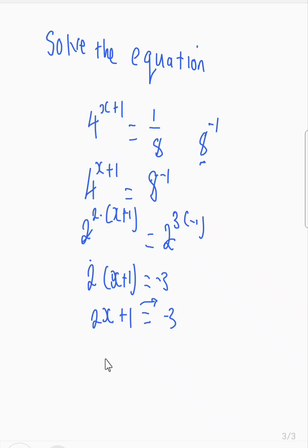So we have 2x equals negative 3, and 1 goes up, becomes negative 1. So we have 2x equals negative 3 minus 1, we are getting negative 4.